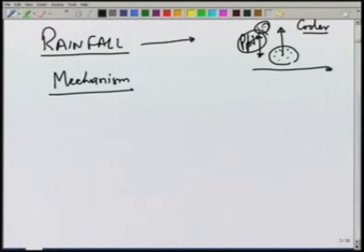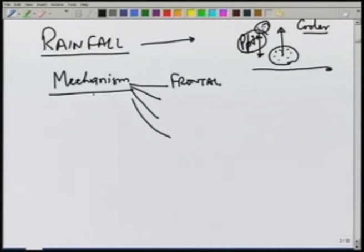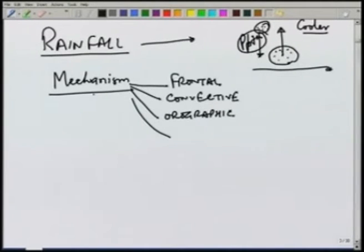There should be some mechanism of creating water vapour and some mechanism of cooling that air mass to a certain temperature so that it can precipitate. The mechanism for cooling will decide what kind of rainfall types we have. Typically, we can classify them as frontal precipitation, convective precipitation, orographic, and cyclonic. Cyclonic also includes anti-cyclonic, which have different directions of wind.